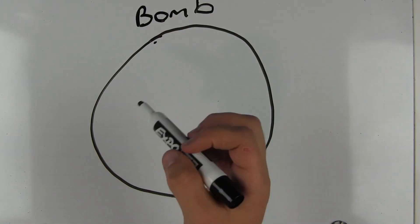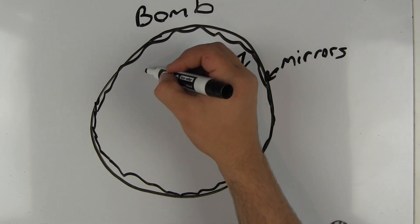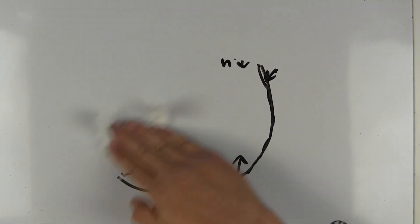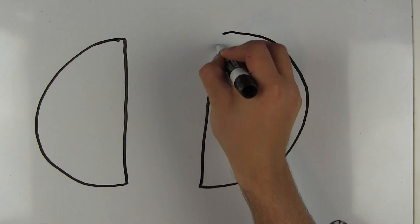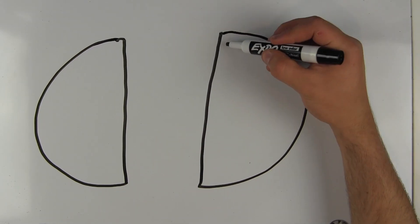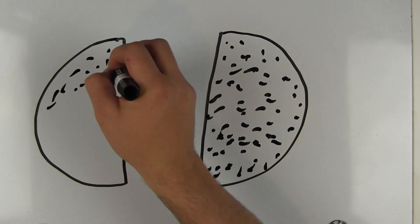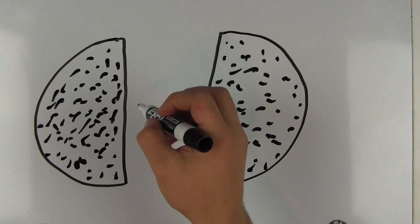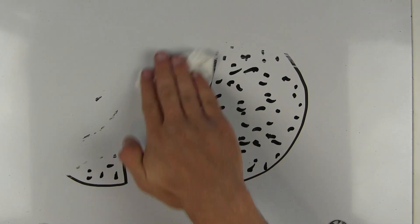Nuclear bombs are made in the shape of a cylinder, with mirrors covering the inside to reduce neutron loss and increase the effectiveness of the bomb. A nuclear bomb will detonate when the chain reaction inside the bomb reaches supercritical mass. The chain reaction is started in two separate halves of the bomb, which don't explode because they are each at subcritical mass.